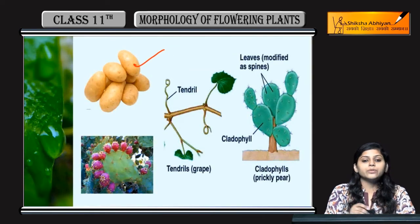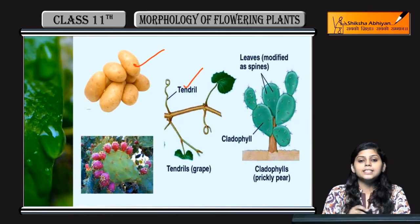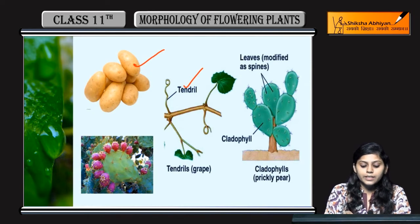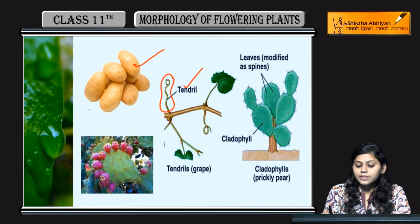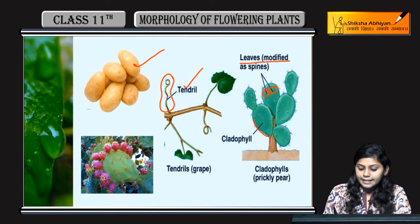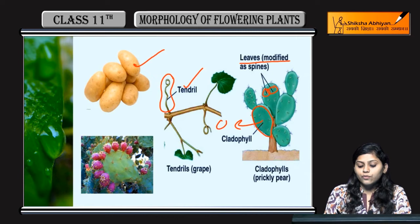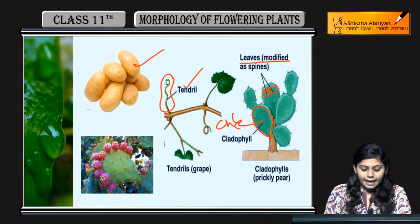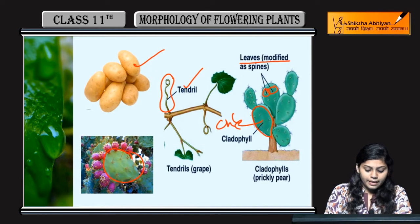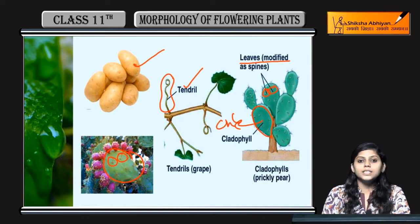Potato underground stem hai. Tendrils climbing mein helpful hoti hain - you can see spirally coiled structures hain. Aur spines hain - yeh leaves ki modification hain. Yeh flattened structure stem ka hai, green color hai, chlorophyll is mein hoga aur yeh photosynthesis karega. Aur yahan pe thorn-like structures bane hain jo herbivores se protect karenge.